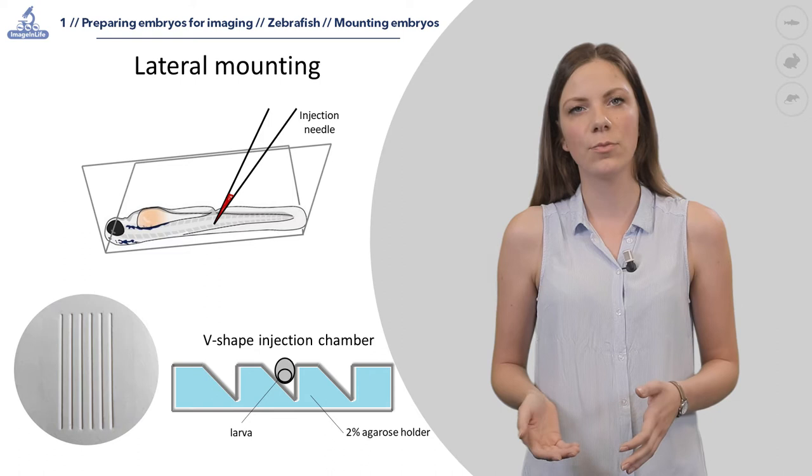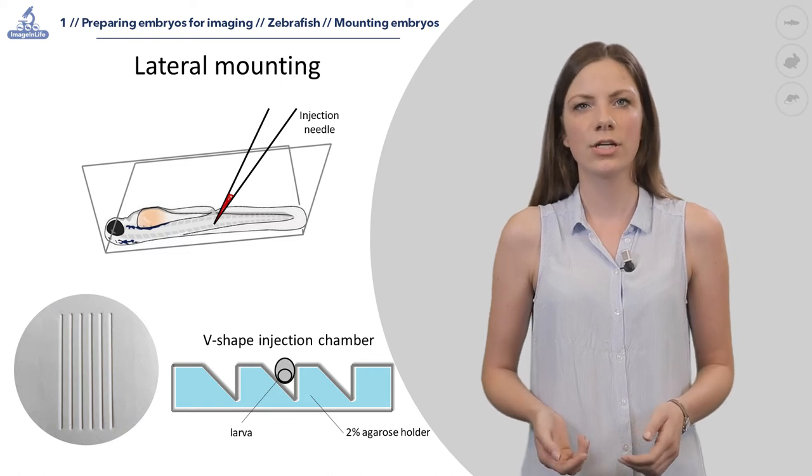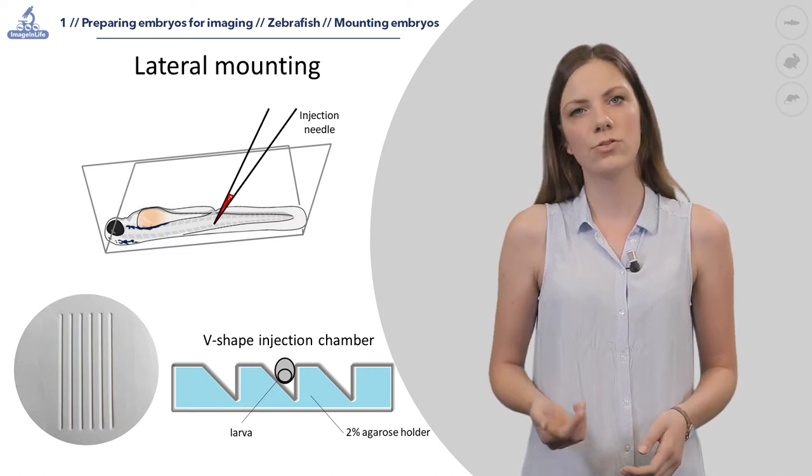To orientate larvae in lateral position, we use agarose injection chambers of V-shape as shown in this figure.